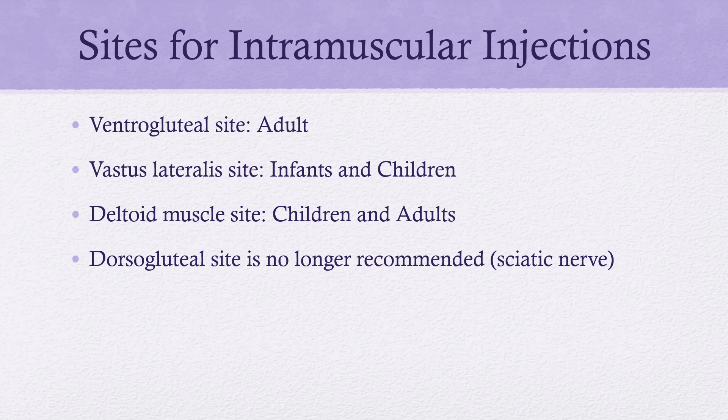These are the different sites for IM injections. The dorsogluteal site is no longer recommended — it hasn't been recommended for about 10 years. Evidence showed it wasn't safe because of the location of nerves, making it too easy to accidentally place the needle tip into a nerve root and cause undue pain or possibly permanent damage. We'll focus on the top three sites, knowing that dorsogluteal is no longer recommended.